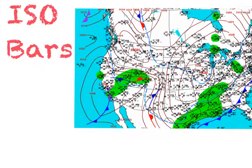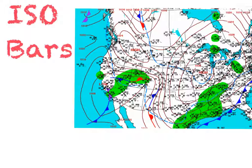Isobars identify the highs and lows of pressure systems. All these lines are connecting areas of similar air pressures. A reading of 1013 or higher equals a high pressure system. Anything lower than 1013 is a low pressure system. As you can see here, there's a 1008, and that's creating a low pressure system because it's lower than 1013.